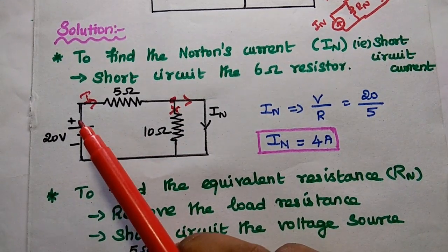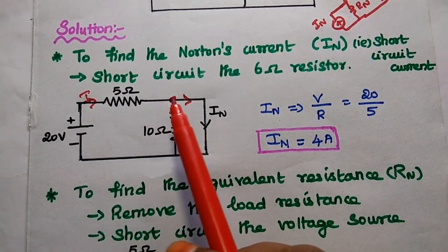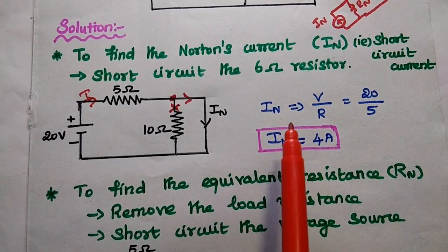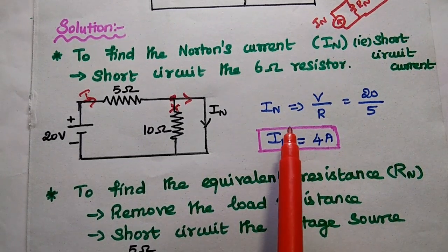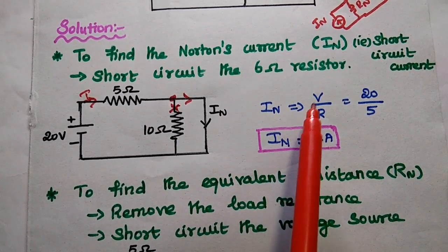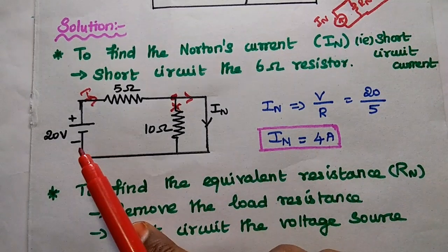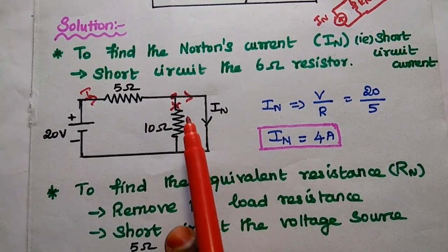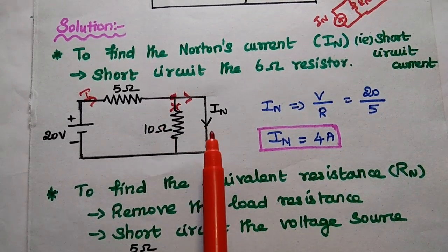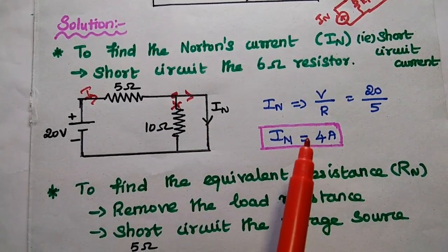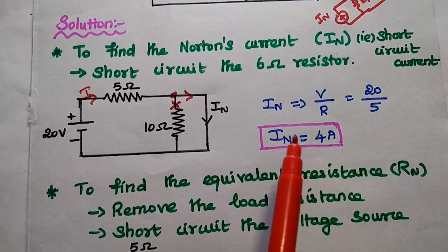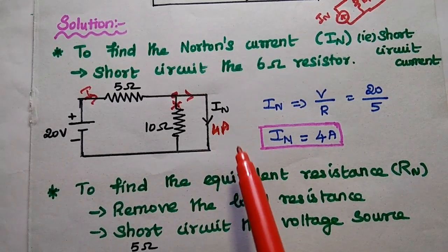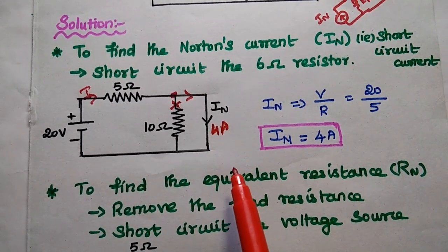The current from the voltage source is directly given to the short circuited path. Using Ohm's law, IN equals V divided by R. V is 20 volts and R is 5 Ohm — we do not consider the 10 Ohm. So 20 divided by 5 gives 4 Ampere flowing through the short circuited path.